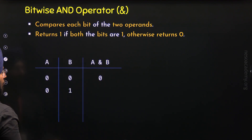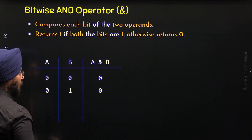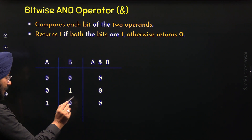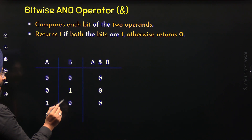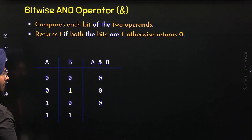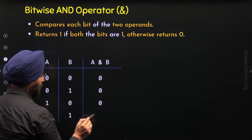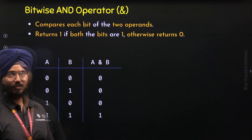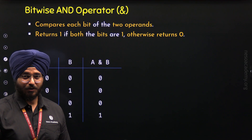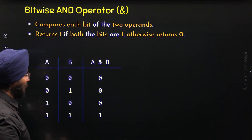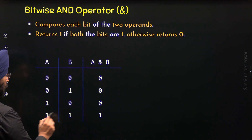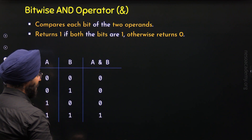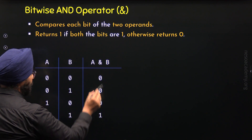Similarly, when a is 0 and b is 1, we get 0. When a is 1 and b is 0, we get 0. But when a is 1 and b is 1, then we get the result of Bitwise AND as 1. So from this truth table, we can conclude that when both the bits are 1, we get the result as 1; otherwise we get 0.